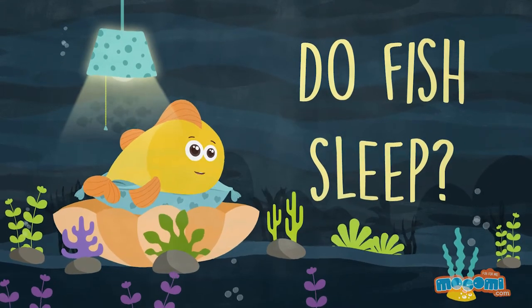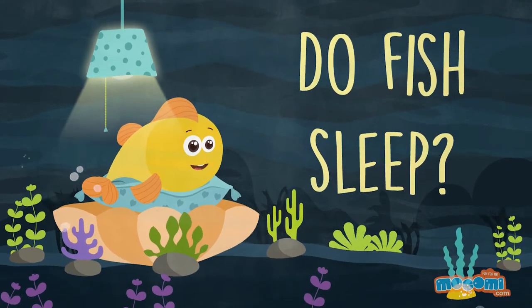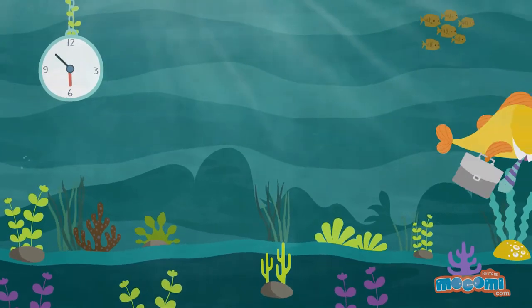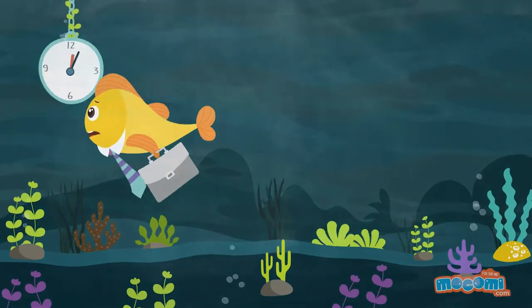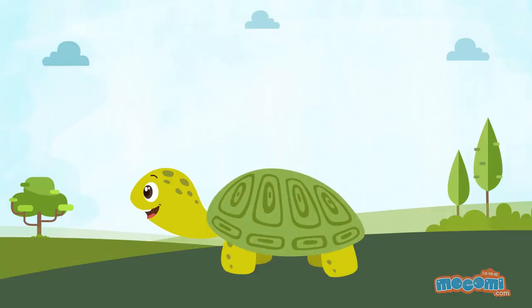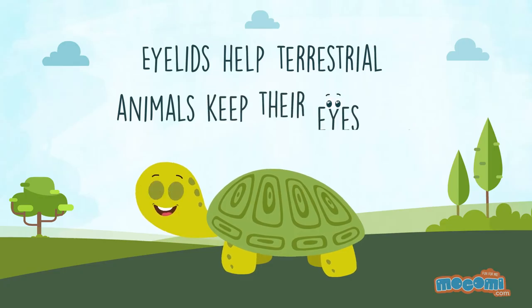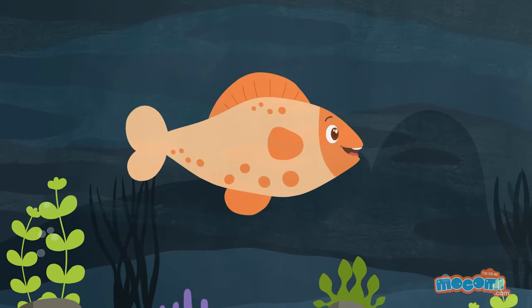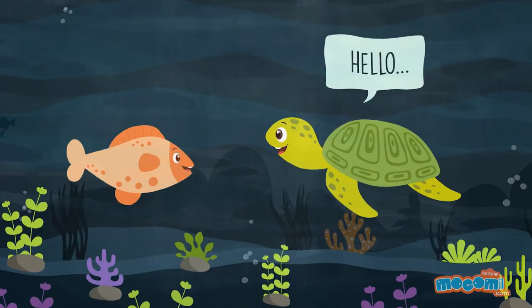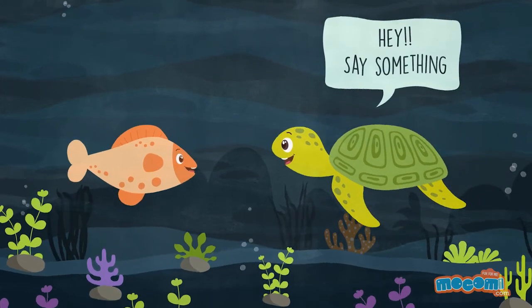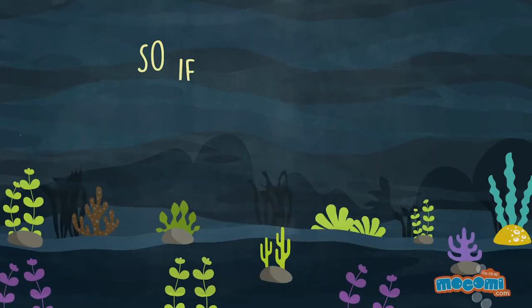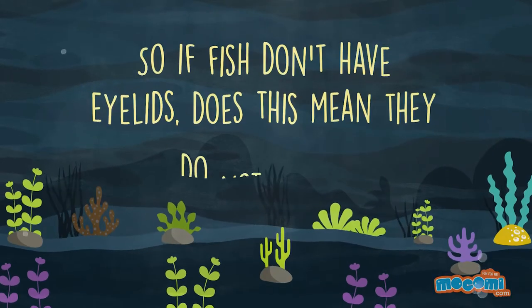Do fish sleep? Imagine a fish swims all day long. It must get really tired and probably just wants to have a shut eye. But how? Most fish have no eyelids. Eyelids help terrestrial animals keep their eyes moist. But since fish are always underwater they do not need eyelids to help keep their eyes moist. So, it's really difficult for us to make out if they are sleeping or not.